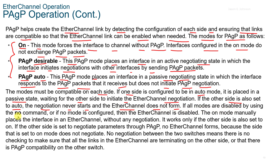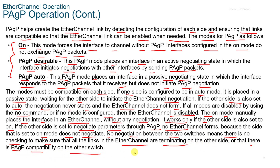If all modes are disabled using the NO command, or if no mode is configured, then the EtherChannel is disabled. The ON mode manually places the interface in an EtherChannel without any negotiation. It only works if the other side is also set to ON. If the other side is set to negotiate parameters through PAGP, no EtherChannel forms because the side set to ON mode does not do the negotiation. No negotiation between the two switches means there's no checking to make sure all the links in the EtherChannel are terminating on the other side, or that there is PAGP compatibility on the other switch.